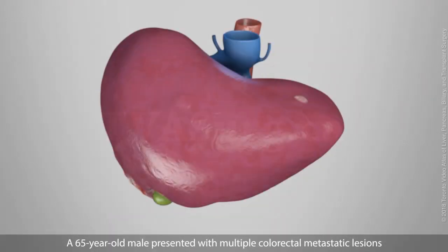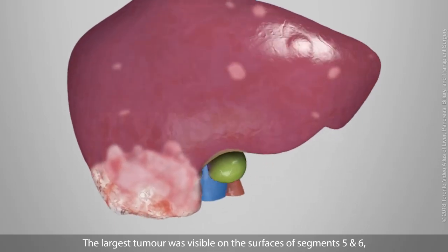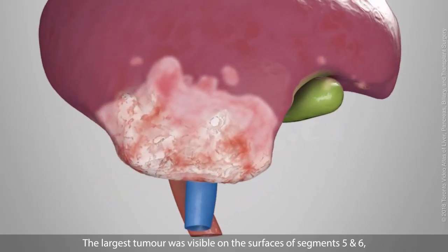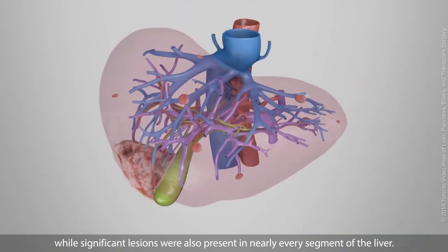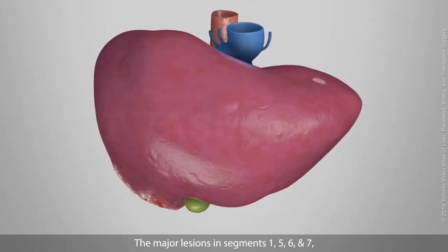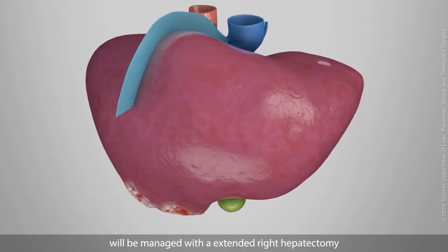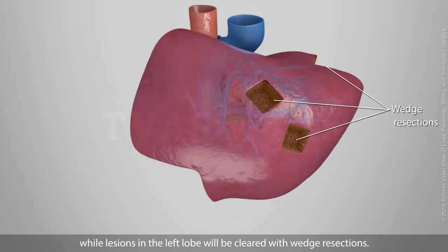A 65-year-old male presented with multiple colorectal metastatic lesions in a non-cirrhotic liver. The largest tumor was visible on the surfaces of segments 5 and 6, while significant lesions were also present in nearly every segment of the liver. The major lesions in segments 1, 5, 6, and 7 will be managed with an extended right hepatectomy, with preservation of segment 8, while lesions in the left lobe will be cleared with wedge resections.